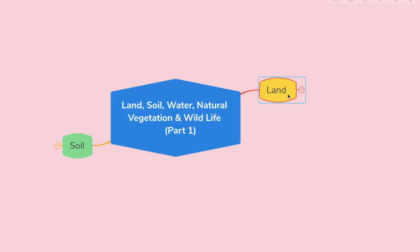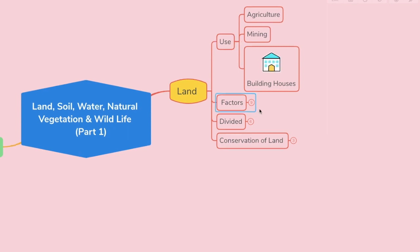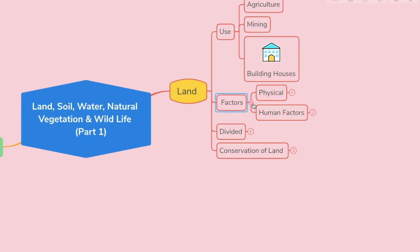Let's study a little bit more about land — its uses and how we can conserve our land. Land is used for different purposes: agriculture, mining, building houses, etc. There are a couple of things that affect the use of land — first is the physical factor and the other is human factors.